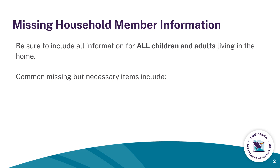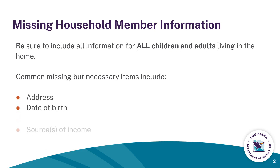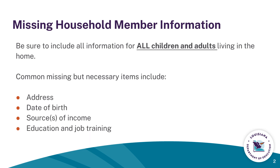Include as much information about each household member as possible, including their address, date of birth, their sources of income, and any information about education or job training. If this information is not provided, you may experience case processing delays or be rejected for child care assistance.